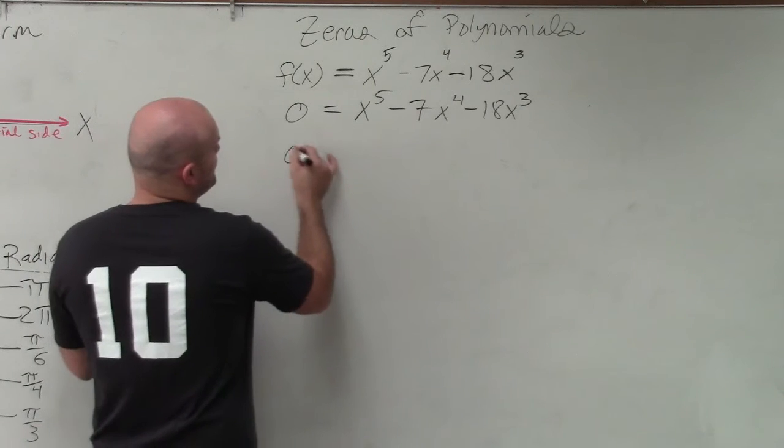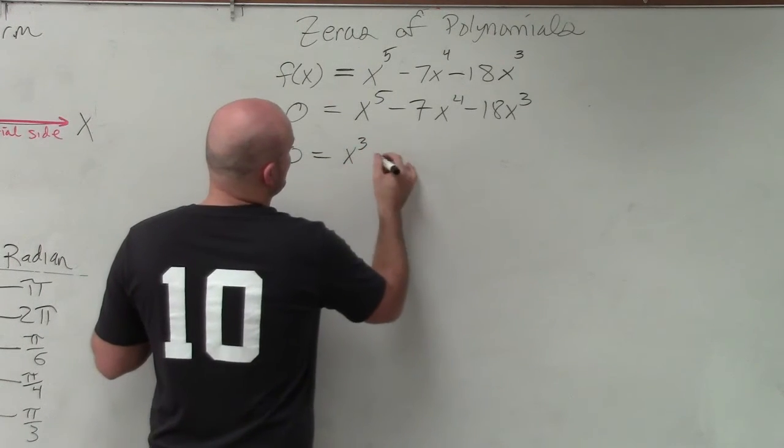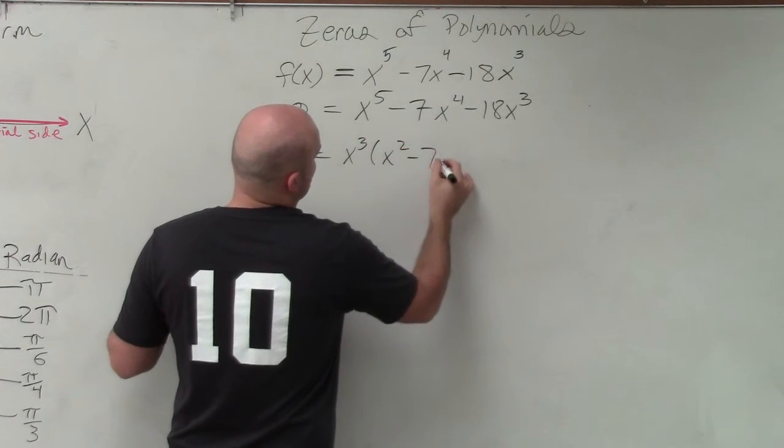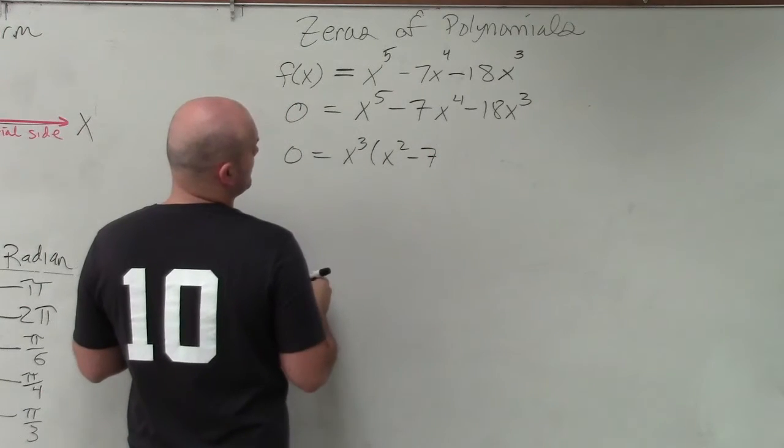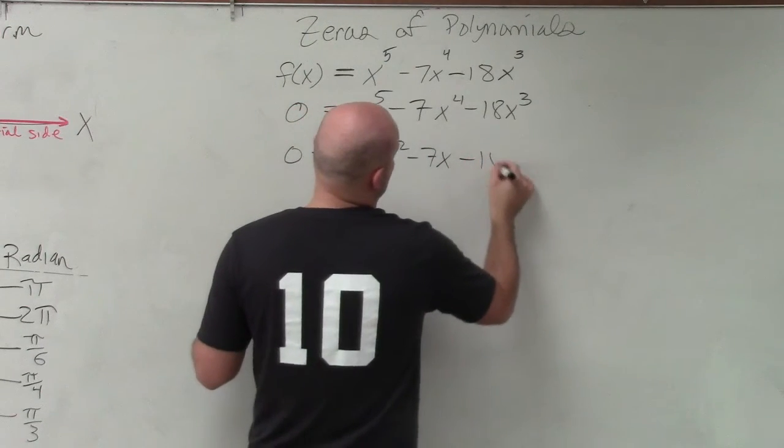So by factoring out an x cubed, I'm left with x cubed times x squared minus 7x minus 18.